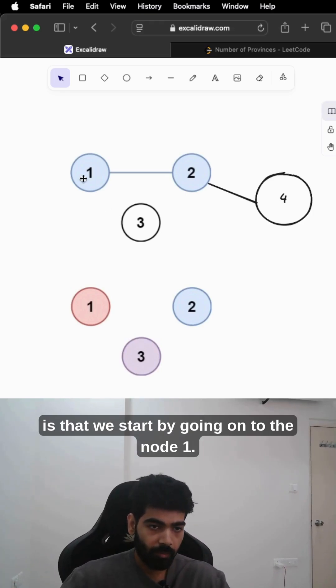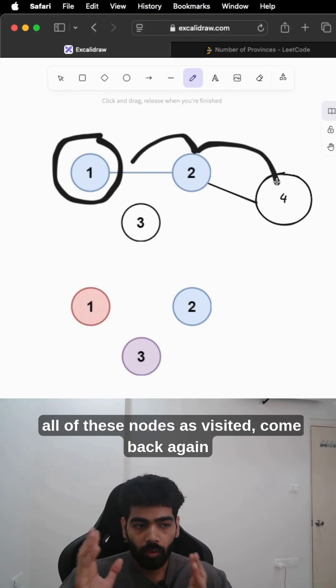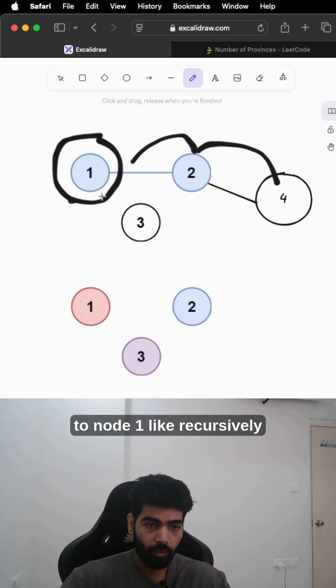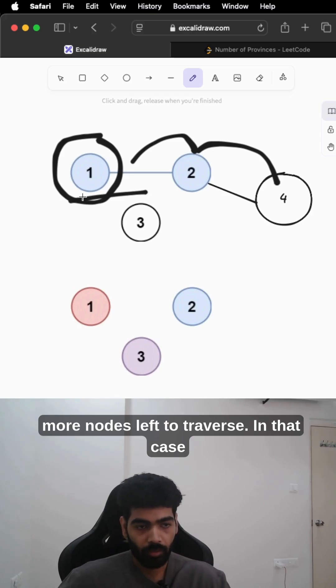Let me explain what I mean. We start by going to node one, then node two, then node four. We mark all of these nodes as visited and come back to node one through recursive backtracking.